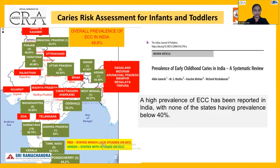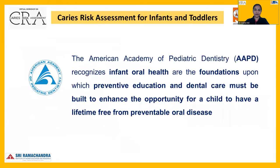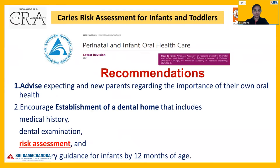The disease can be prevented under three steps: primary prevention, secondary, and tertiary prevention. ECC can be prevented at the initial level by the establishment of infant oral health care. The American Academy of Pediatric Dentistry recognizes infant oral health as a foundation upon which preventive education and dental care must be built, to enhance the opportunity for the child to have a lifetime free of preventable oral diseases.